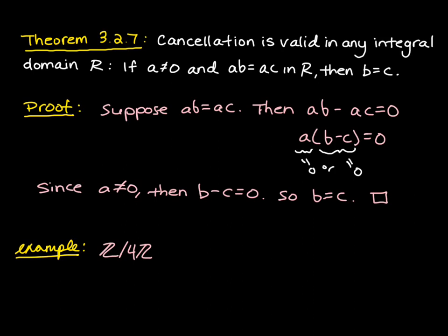And consider the following equation. Two times three equals two times one. And so is this true? Of course it is. When we do two times three, we get six. That's congruent to two mod four. And then two times one is equal to two, which is congruent to two mod four. But, note,